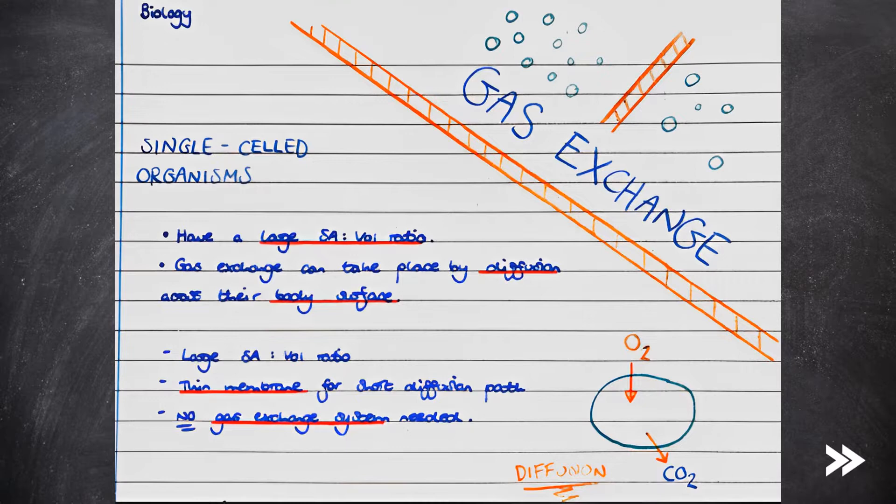So let's start off with single-celled organisms and how they are adapted for efficient gas exchange. Single-celled organisms have a large surface area to volume ratio as well as a thin cell surface membrane which provides a short diffusion path. Therefore, gas exchange can take place by diffusion across the surface of the single-celled organism, and therefore no gas exchange system is needed.